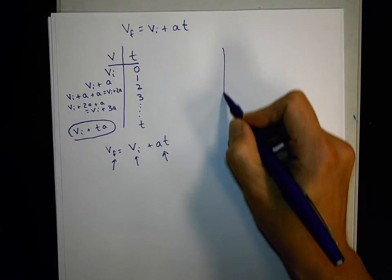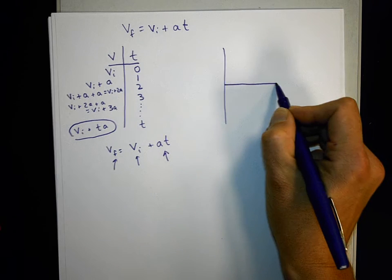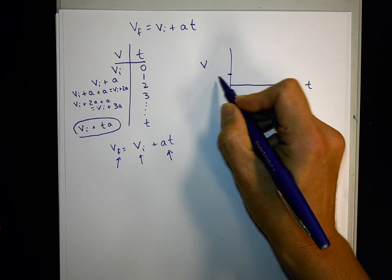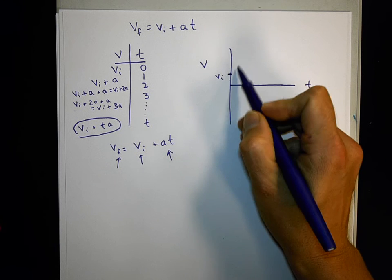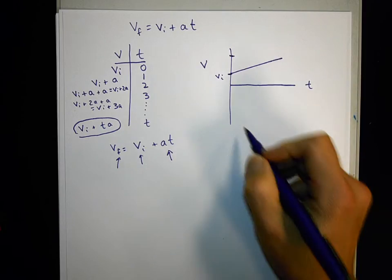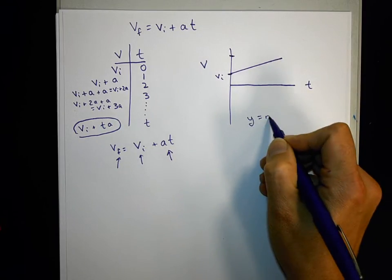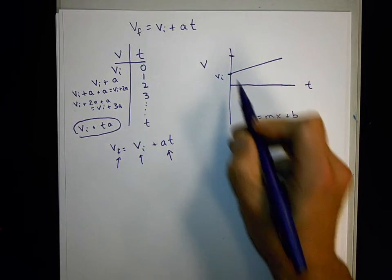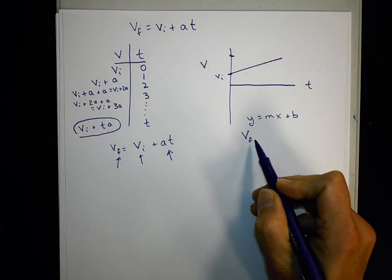What a lot of students like better for a derivation is to think about a velocity time graph and to say if I start at some velocity and I want an expression for the velocity at the end, it's really a line. So I'm really kind of saying Y equals MX plus B. And I just have to think: what's Y? Y is velocity. And if I want to know the Y at the end, it's my velocity final.